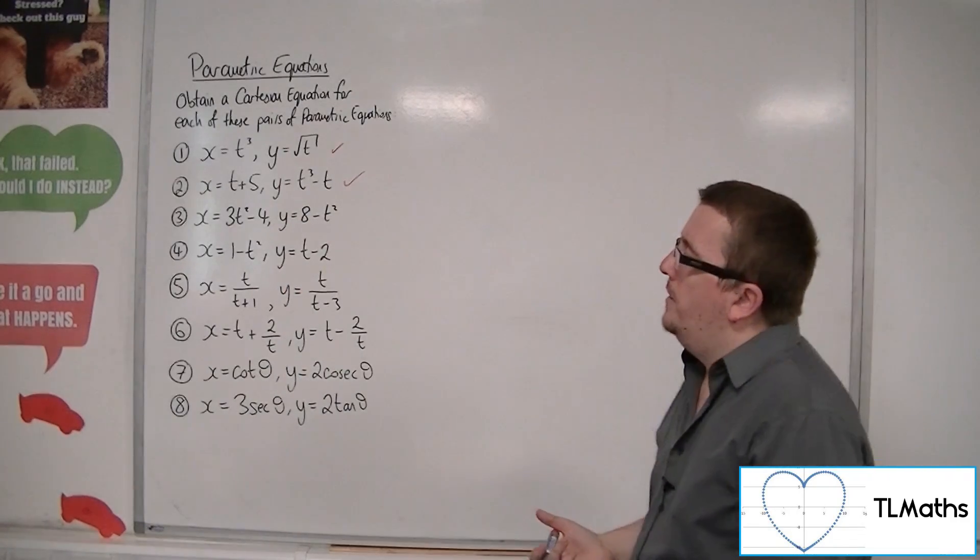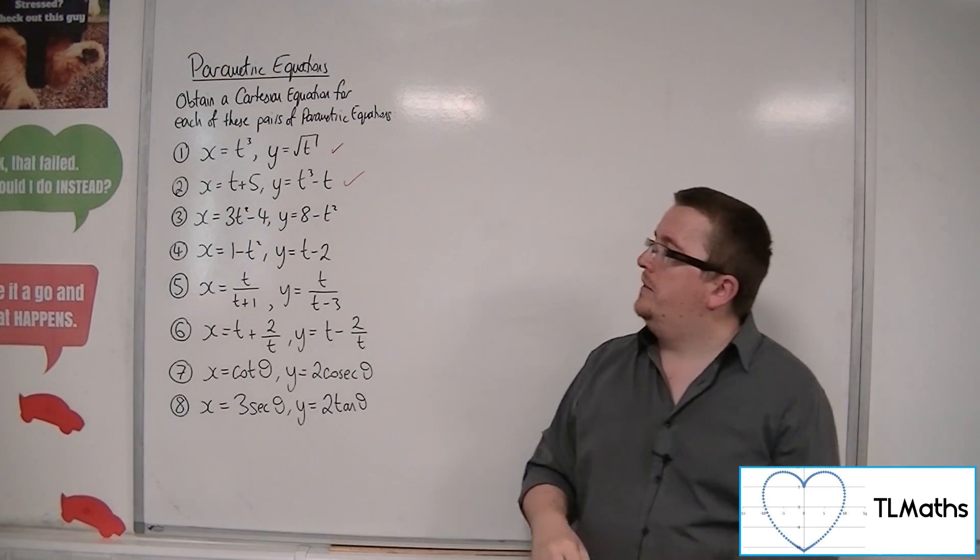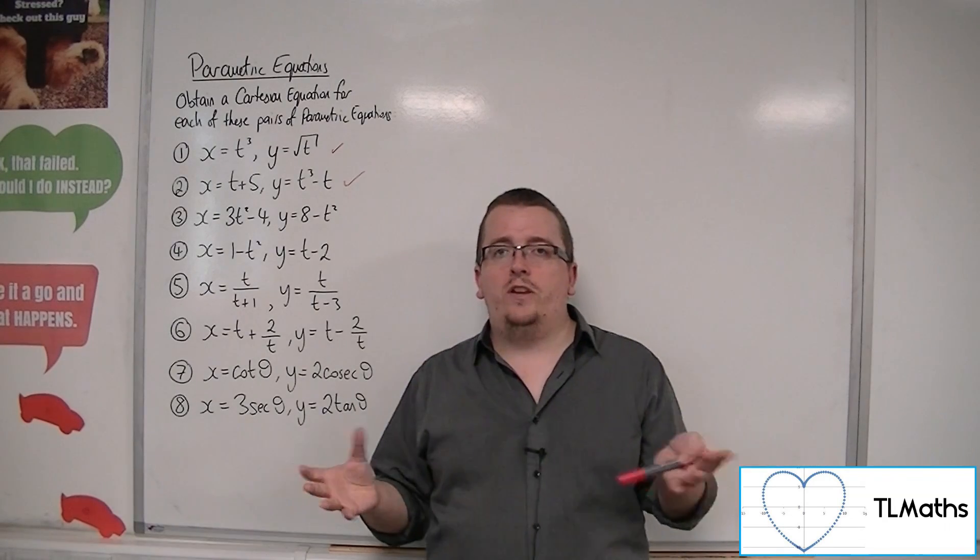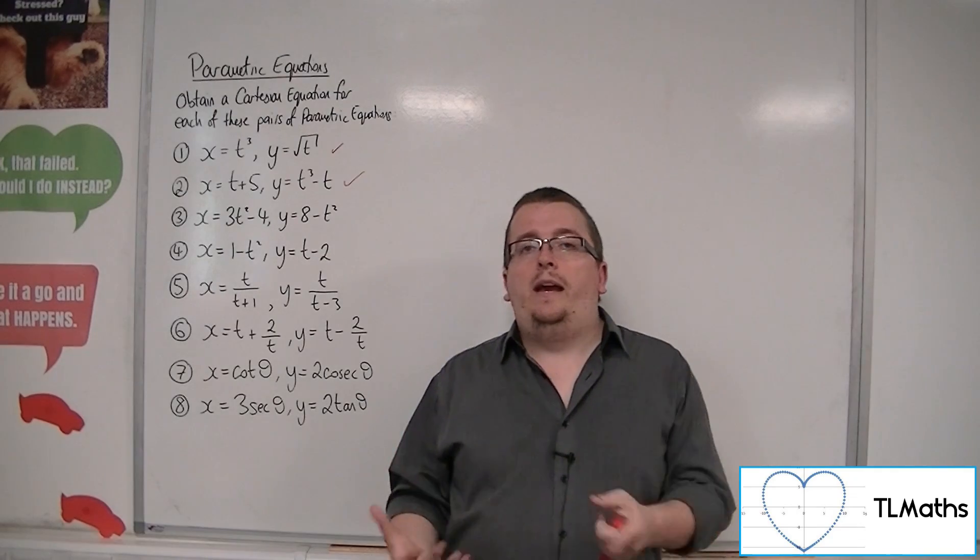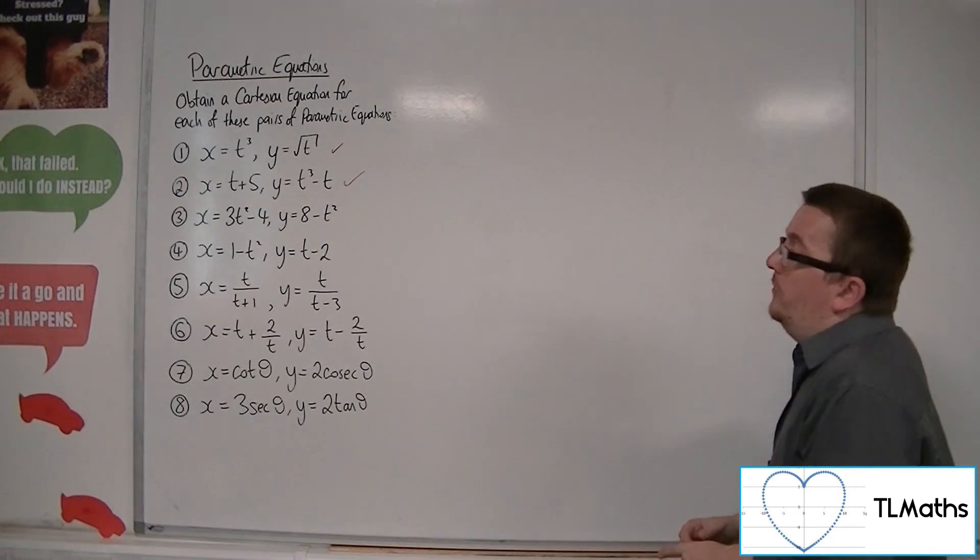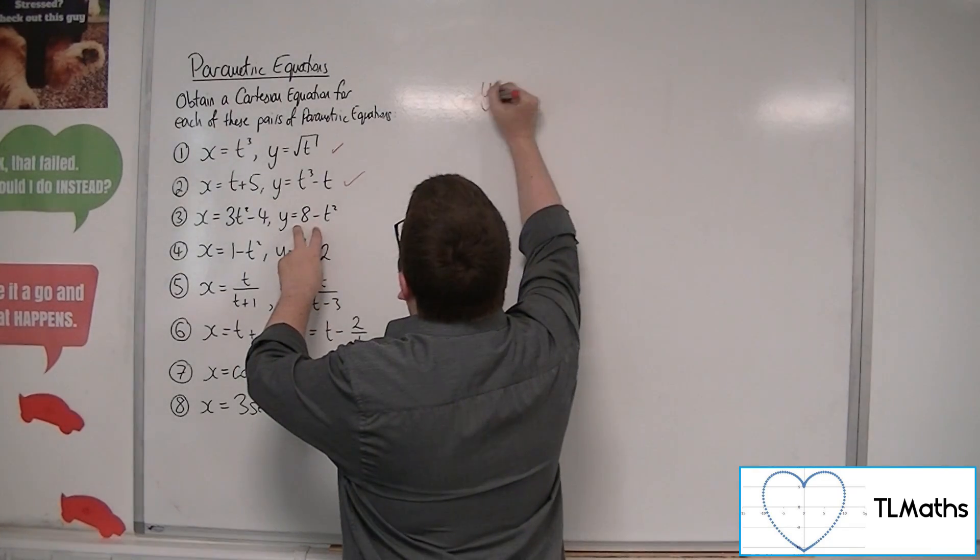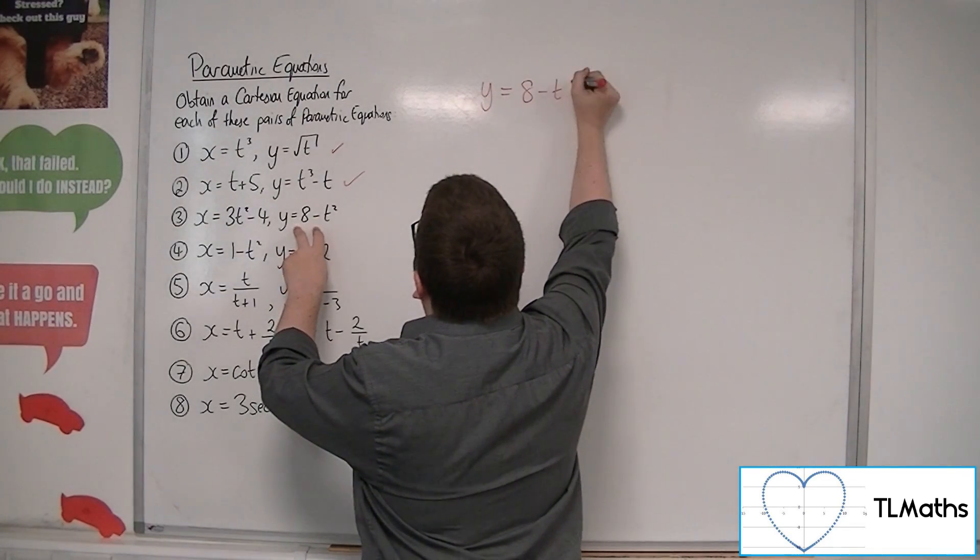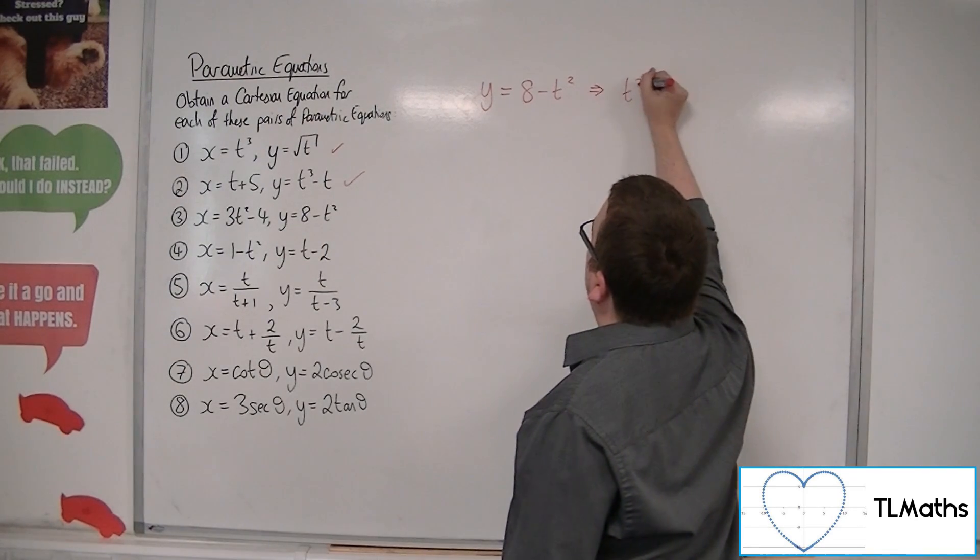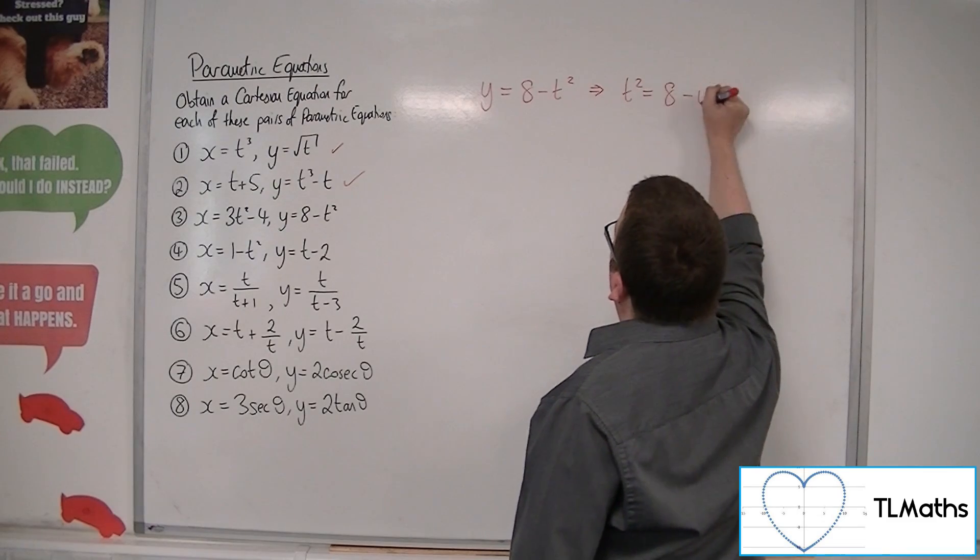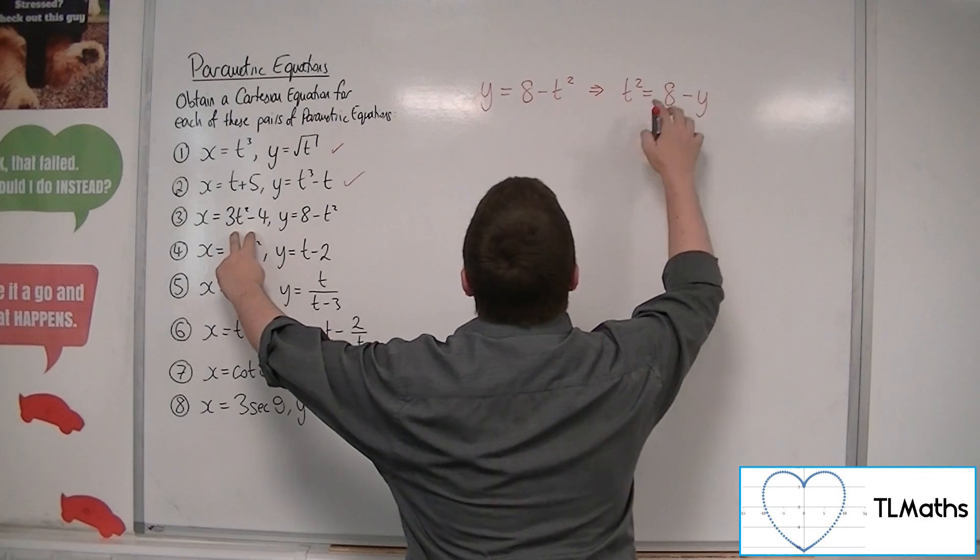Right, number 3. x equals 3t squared minus 4 and y equals 8 minus t squared. Now, it can be that in certain circumstances you might be going, well, actually, I seem to have no choice here. I must get t equals and I would need to square root in both of these cases in order to do it. However, what might be easier to work with, and certainly is in this case, is if you take one of these equations and rearrange it to get t squared.